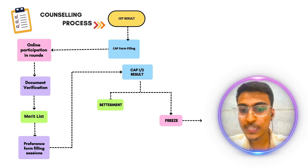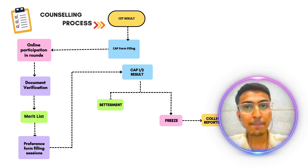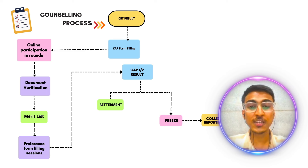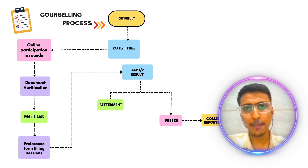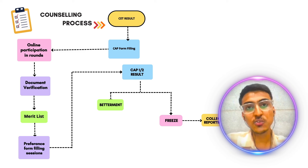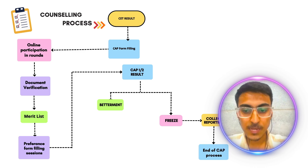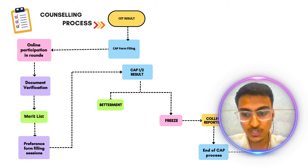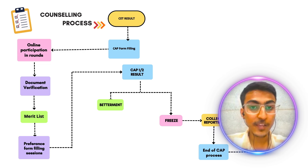अगर आपने freeze button पे click कर दिया, तो आप आगे further rounds में भाग नहीं सकते — यह चीज़ याद रखो। अगर आपने CAP 1 में freeze कर दिया, तो आप CAP 2 और CAP 3 में भाग नहीं पाओगे। अपने CAP 2 में freeze किया तो आप CAP 3 में नहीं जा पाओगे। लेकिन CAP Round 1 के लिए सभी students को betterment के लिए ही जाना है — यह चीज़ याद रखना। Freeze option पे जैसे आप click करोगे, आपको college में report करना पड़ेगा, वहाँ पर original documents submit करने पड़ते हैं — जैसे सारे documents submit करते हो, आपकी CAP round process खतम हो जाती है और आपका final admission हो जाता है।